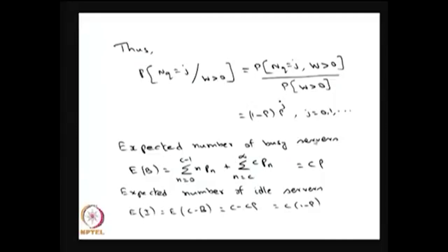The next measure is the expected number of busy servers. What is the average number of busy servers? That is nothing but the summation of n from 0 to c minus 1 of n times P_n. That means whenever the system size is less than c, only those many servers are busy. Whenever n or more customers are in the system, all c servers are going to be busy. Therefore c times P_n. If you simplify, you will get c times rho as the expected number of busy servers.